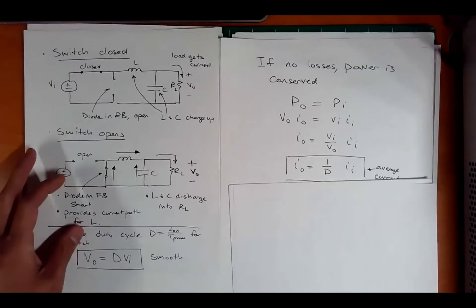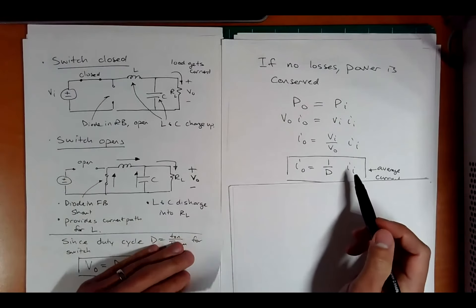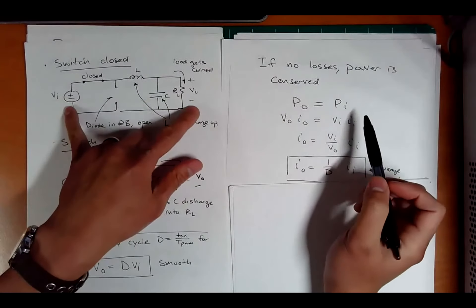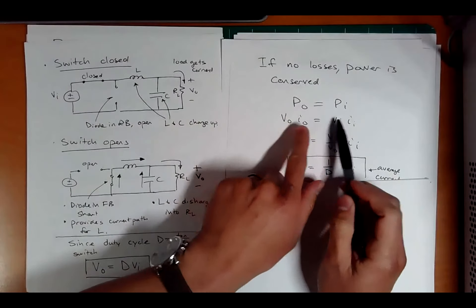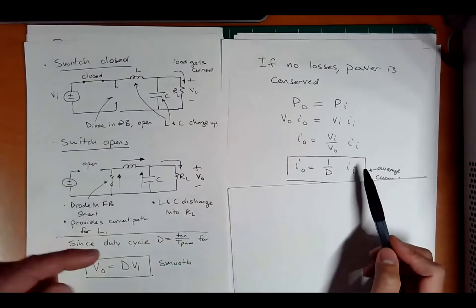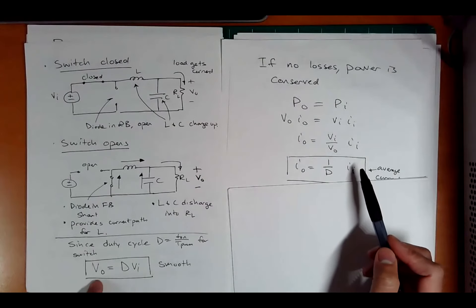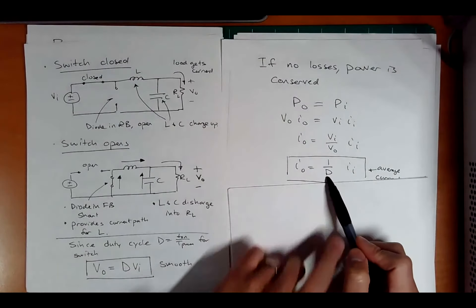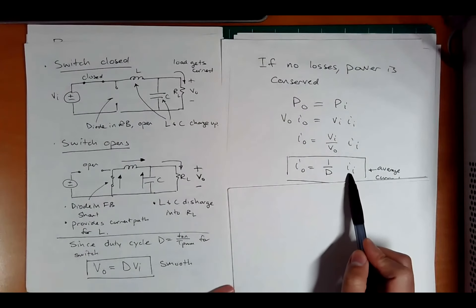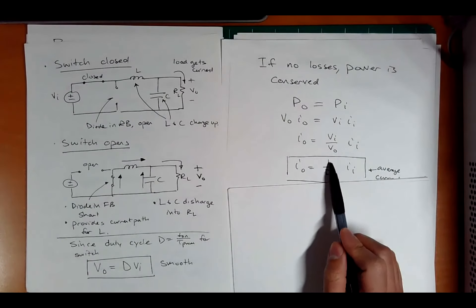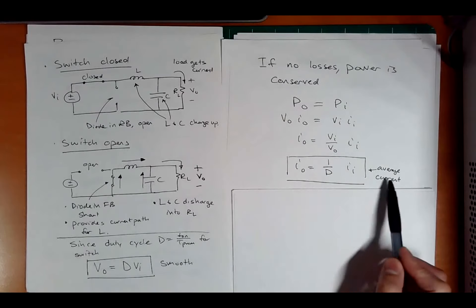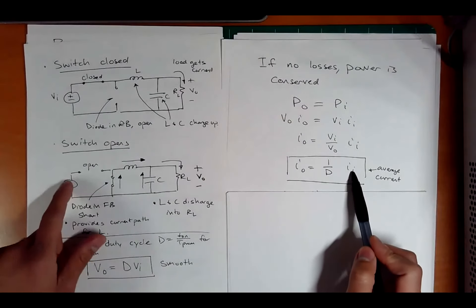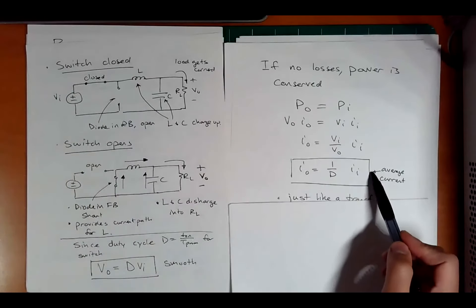Now, if there's no power losses in the system, which is not possible, but in an ideal situation, the output power and the input power are the same. So we know power is I times V. And if you have a relationship of output to input like so, the current is going to have the inverse relationship. So instead of IN times D, it's IN times one over the duty cycle to the output. I put average current here because this input current is going to be choppy. It's going to be on and off.